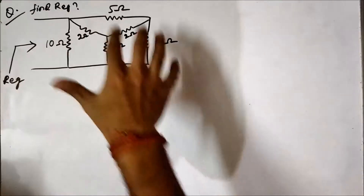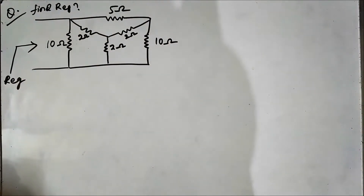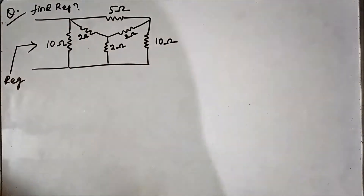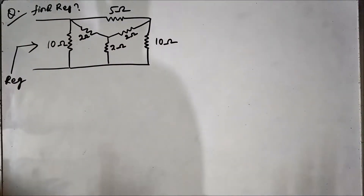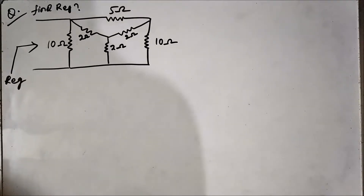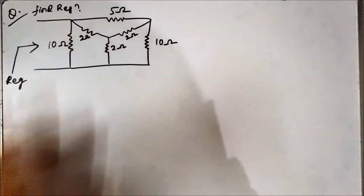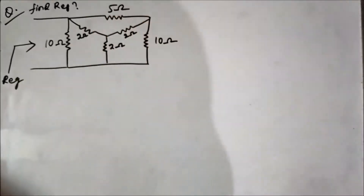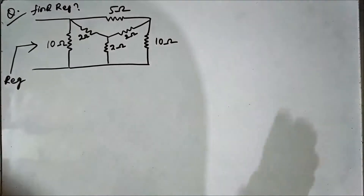Here we are going to consider another question based on star and delta transformation. We have to calculate the equivalent resistance. Here the star to delta transformation concept will be used indirectly for the evaluation of equivalent resistance. In the previous problem we directly evaluated the star network of a given delta network. Here we are going to use the star to delta transformation concept to solve this network and find the equivalent resistance between these two points.